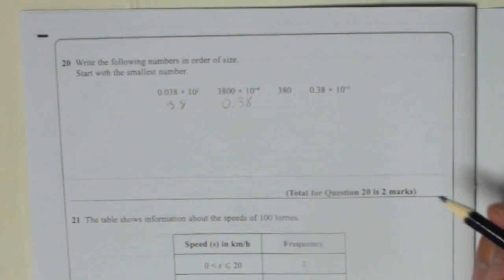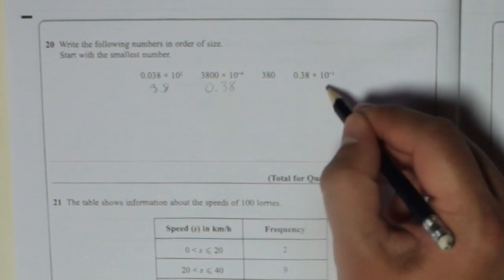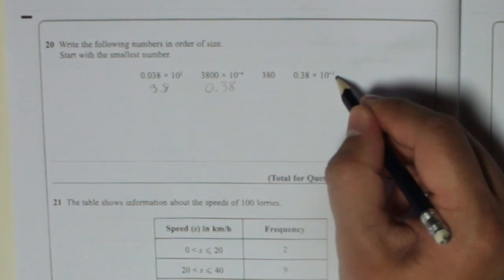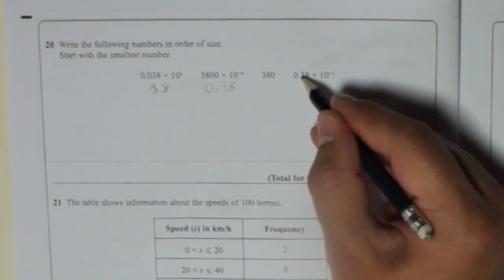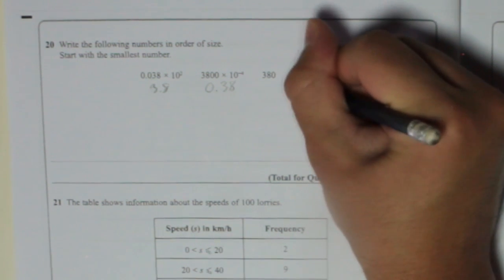380 is just 380. And then 0.38 times 10 to the minus 1 means divide it by 10 once, which makes it 0.038.